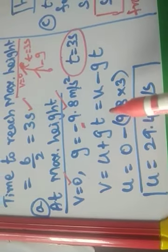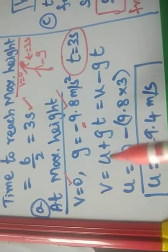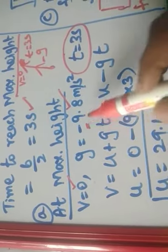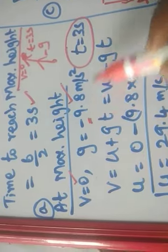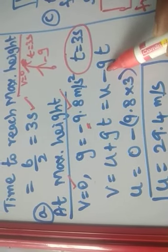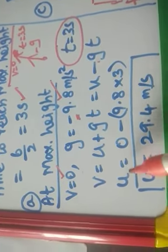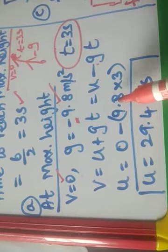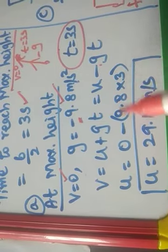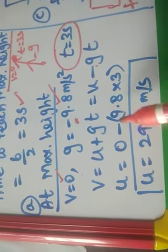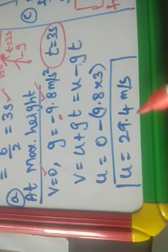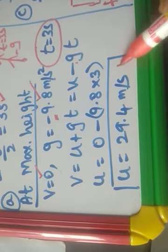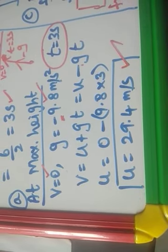Using V = U + GT, where G is the acceleration due to gravity and is negative, we substitute the values. Rearranging, U comes to one side and the final velocity to the other. We get the initial velocity U = 29.4 metres per second.